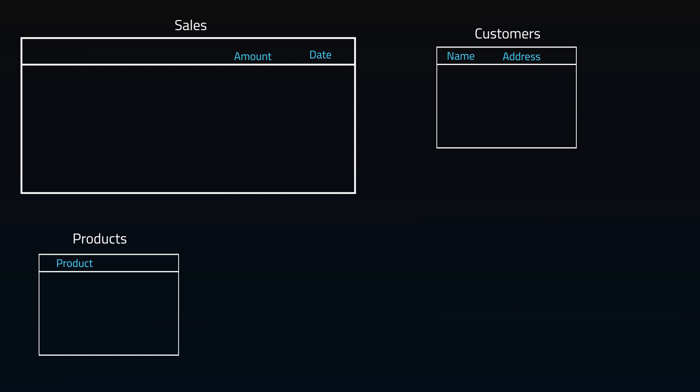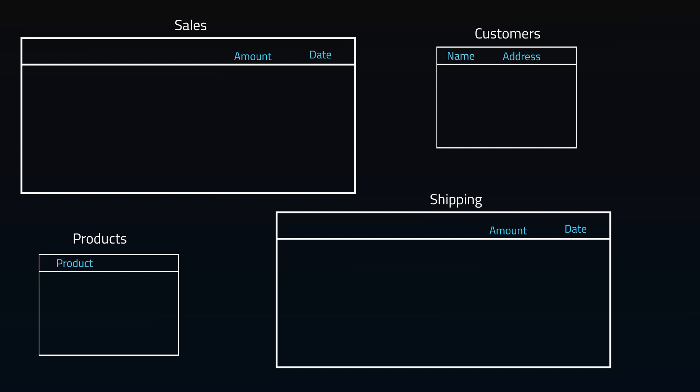In this case, if your shipping data and your customer data has overlap, you might use a dimension shared between different fact tables to limit the amount of duplication of data in your data warehouse.